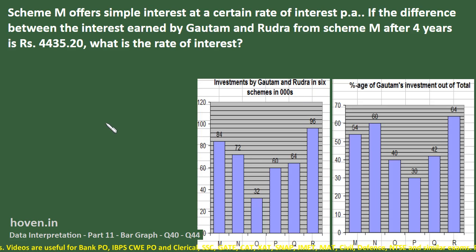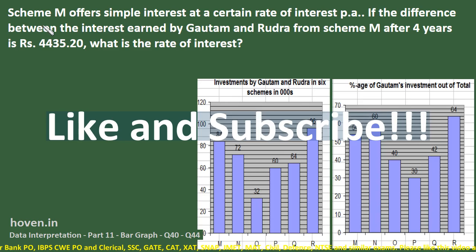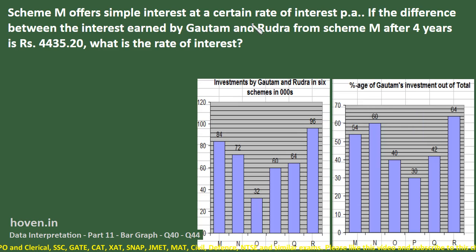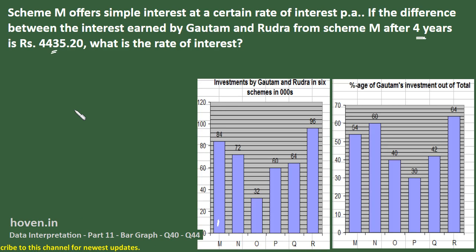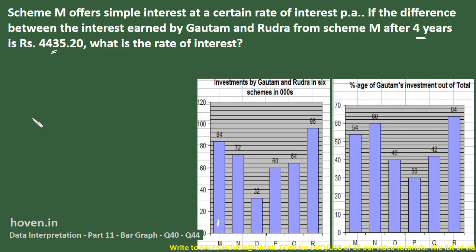The first question: scheme M offers simple interest at a certain rate per annum. If the difference between the interests earned by Gautam and Rudra from scheme M after four years is given, what is the rate of interest? This requires a conceptual understanding of simple interest — bookish knowledge will not help. You should review the videos on simple interest and compound interest, where the theory is covered in depth.